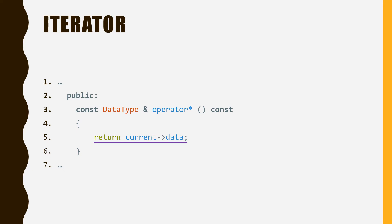Then, we will need to define the operators for dereferencing and address increment. Let's first work on the dereferencing operator star. We know that if we dereference an iterator, we would expect to get the data content stored in the node pointed by the iterator. So, in line five, we return the data field of current, which is the node that is currently being pointed.